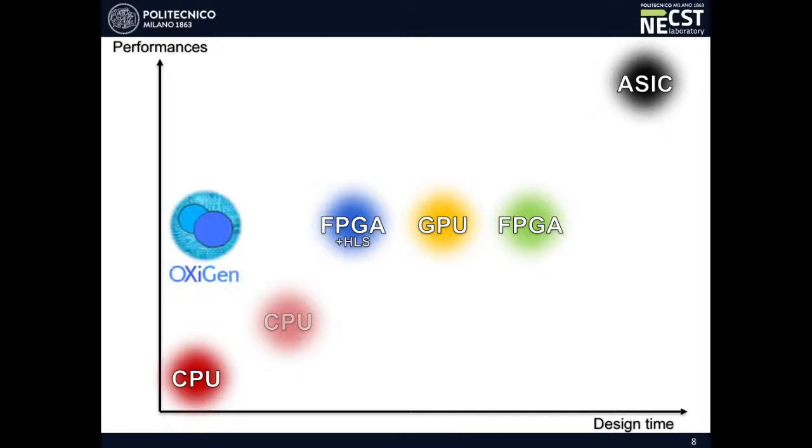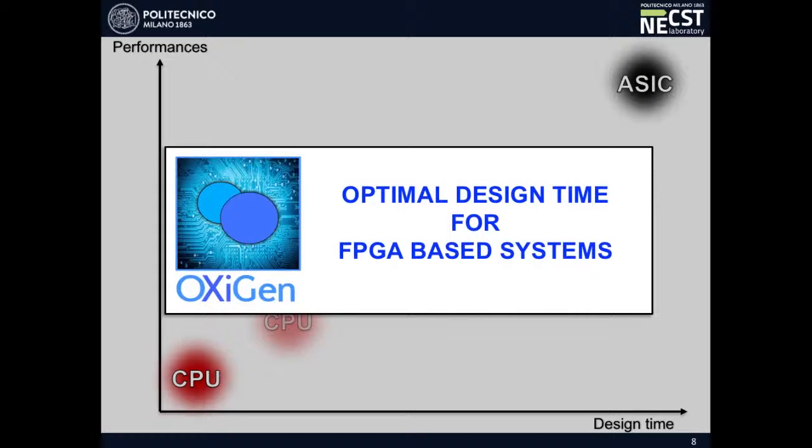Then here comes Oxygen that does it for you, taking your C code and interfacing with the best high-level synthesis tools. In this way, Oxygen, thanks to these tools, provides a solution with better performances compared to the CPU one you started from, but without moving the design time. Oxygen wins because it allows to implement on FPGA the hardware version of your algorithm, with no more effort needed than writing its C version. Pretty easy, isn't it?